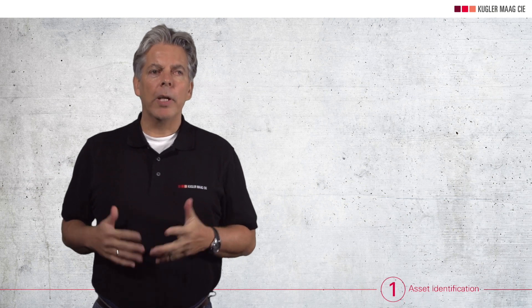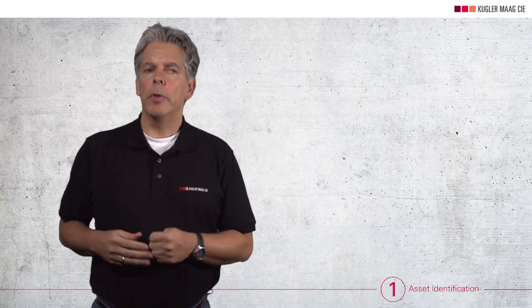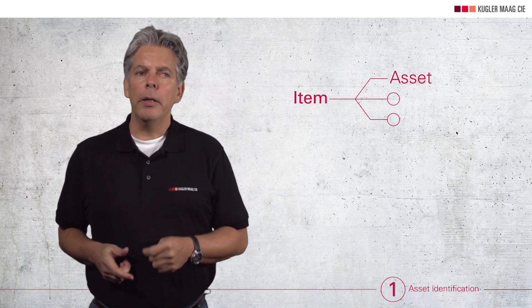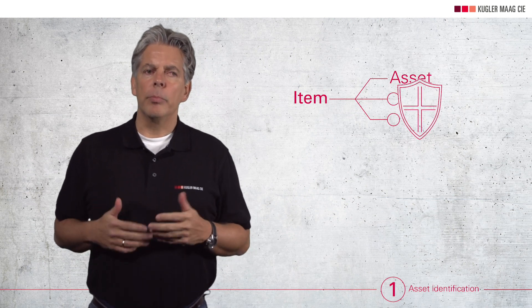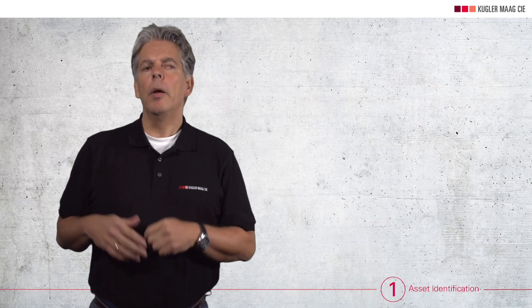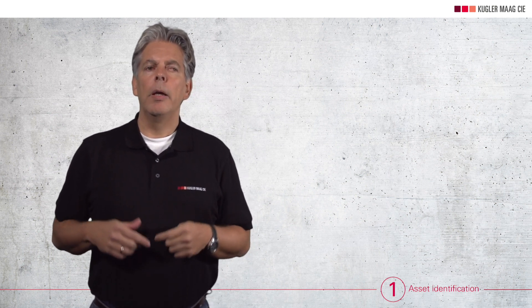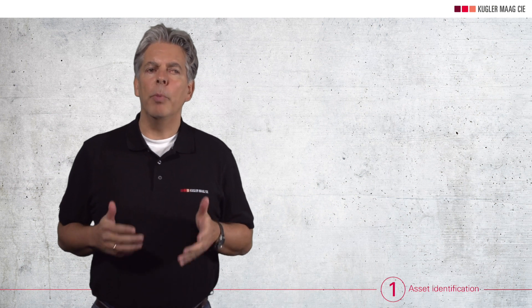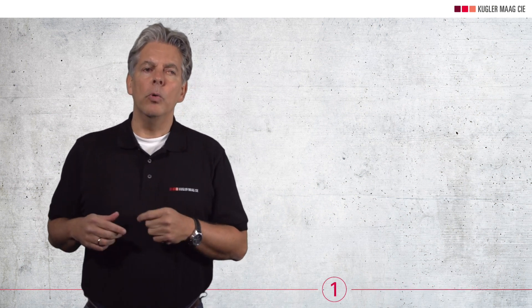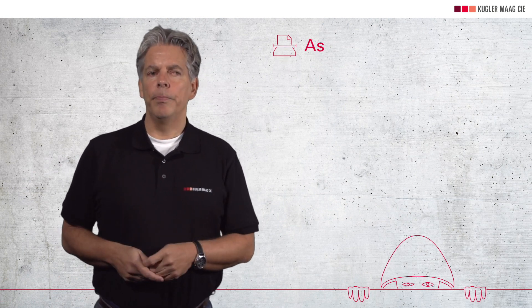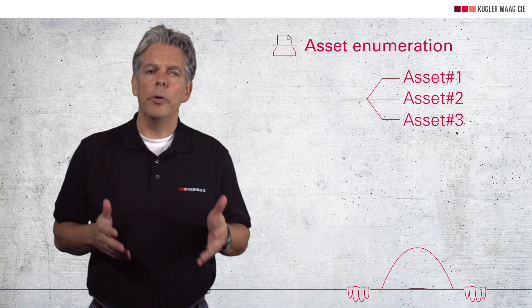Number 1: our first analytical step is the so-called asset identification. An asset belongs to your item and it is worth protecting — it defines a property crucial for a stakeholder. Take for example the internet communication channel; hardly any electronic system is conceivable without this asset. Encryption keys or safety goals are further examples. The asset is very interesting for both parties: for your stakeholder, who gets the required functionality, as well as for an attacker to compromise your system. Therefore, the primary step is to enumerate all your assets.